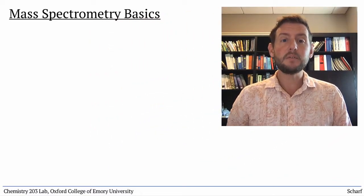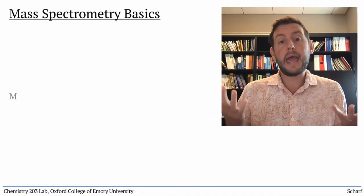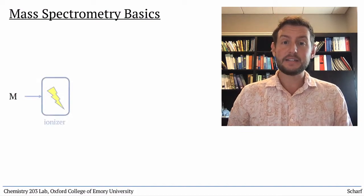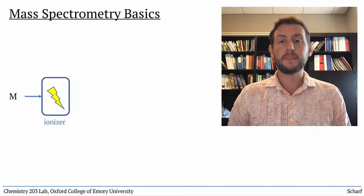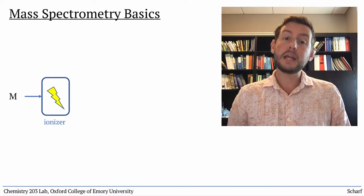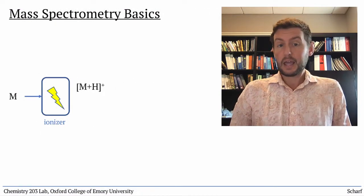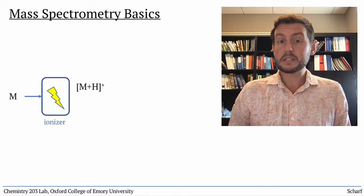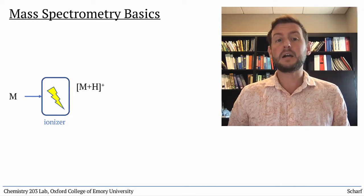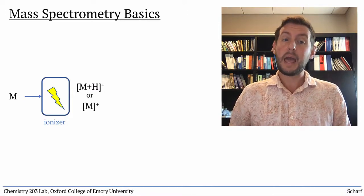First, a sample of a molecule, we'll call it M, is ionized, given a charge. Sometimes this is done by protonating it with an acid to make M plus H plus, and sometimes by knocking off an electron to make M plus.